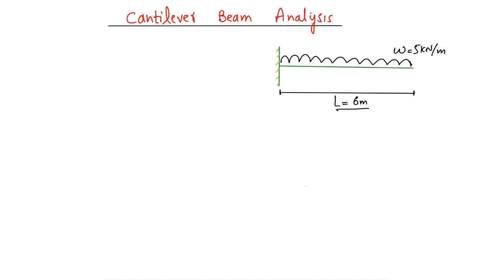Here we have a cantilever beam of length 6 meters with a uniformly distributed load of 5 kilonewtons per meter acting on it. We will find the support reactions and draw the shear force and bending moment diagrams for this cantilever beam, starting with simple calculations.